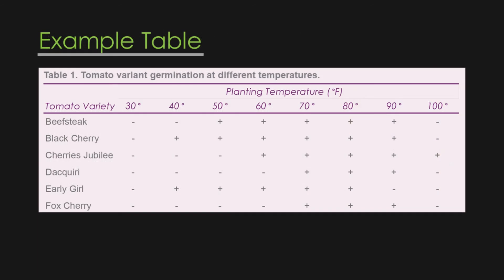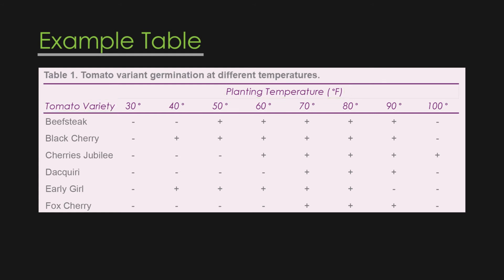Going back to this table one example, the title is 'Tomato Variant Germination at Different Temperatures.' There are meaningful headers showing planting temperatures and tomato variety. This table is an example of presenting the presence or absence of something — in this case, the observation or non-observation of germination.